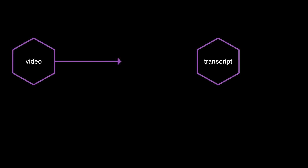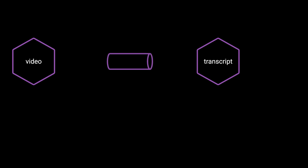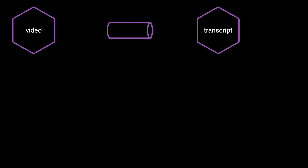Let's go back to our video service example and apply the reactive idea. Instead of the video service sending a request to the transcript service, the video service could publish an event to a channel when a new video has been uploaded. Then the transcript service would subscribe to that channel and react when a new video event appears. Imagine we also have a notification service that sends email when a new video is uploaded — it can also subscribe to that same channel and react to the same event. These types of channels that allow for multiple subscribers are sometimes called topics.